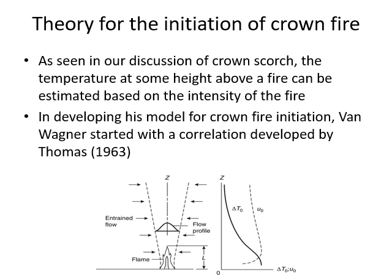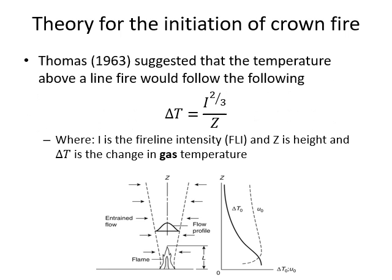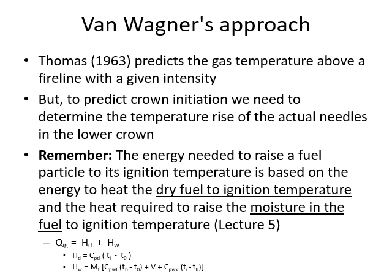Similar to our discussion of crown scorch, Van Wagner worked off a correlation between intensity and temperature change presented by researcher Thomas in 1963. We have an image showing how temperature changes as you go up above the fire line — the temperature decreases as we go up in height Z. The Thomas equation states: change in temperature equals fire line intensity raised to the two-thirds, divided by Z, our height of interest.